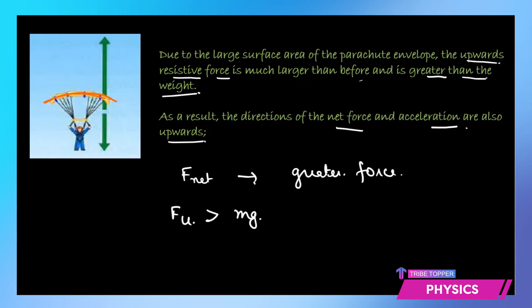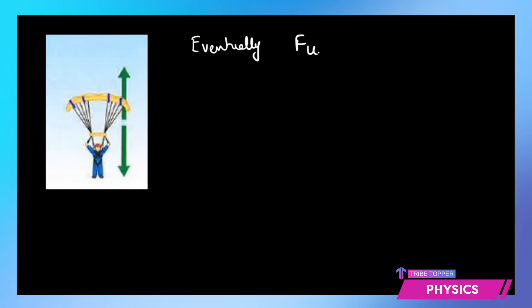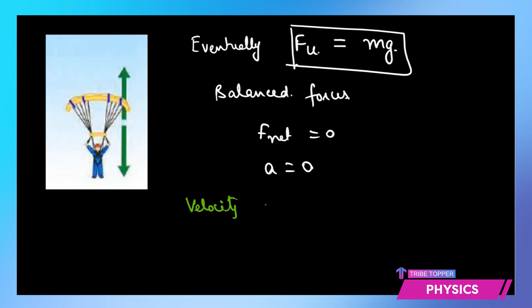At that point the net force acts in the upward direction, and immediately the acceleration also shifts upwards, meaning the velocity decreases immediately. The parachutist is not going to go up — gradually the forces have to balance again. You can see the length of the arrows become equal after some time. Eventually the upward drag of the air becomes equal to the weight acting downwards, the net force becomes zero, the acceleration becomes zero, and again the velocity of the skydiver becomes constant — this is also called the terminal velocity.